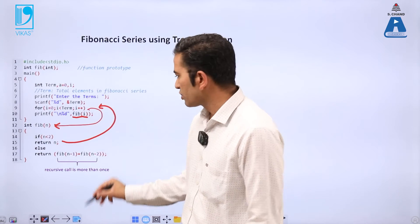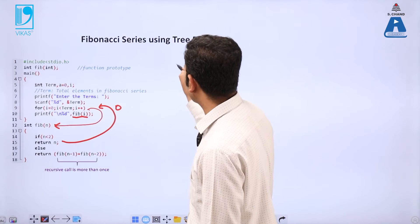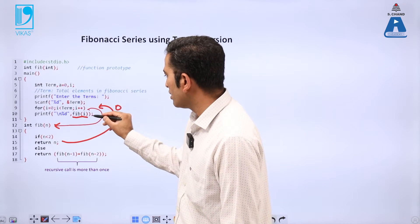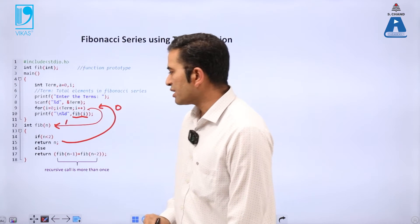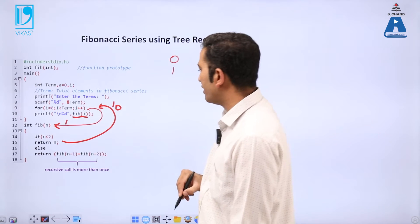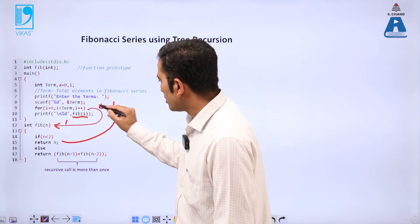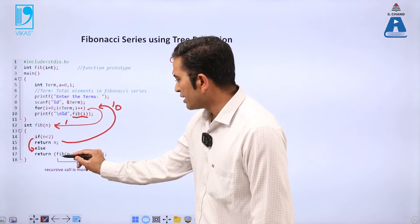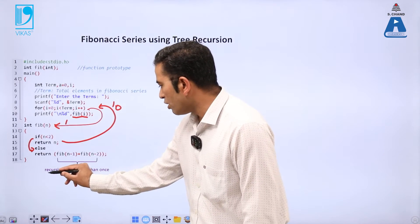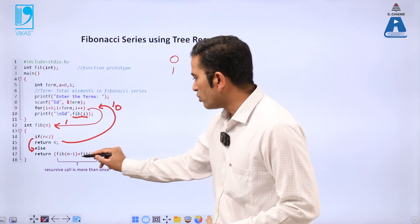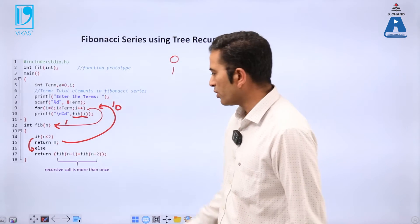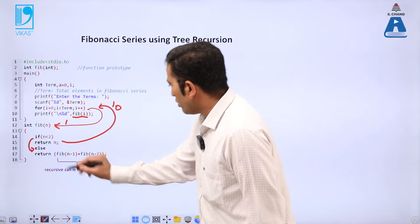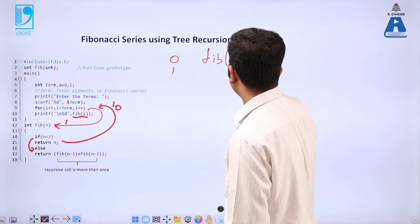When i is 0: 0 is less than 2, condition is true, so we return 0 and print 0. Then i becomes 1: 1 is less than 2, so we return 1 and print 1. When i becomes 2: 2 is less than 2 is false, so we go to the else part. In the else part it says: fib(n−1) plus fib(n−2). Here there are two recursive calls in one statement — this is what makes it tree recursion.